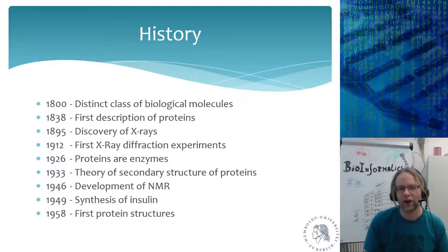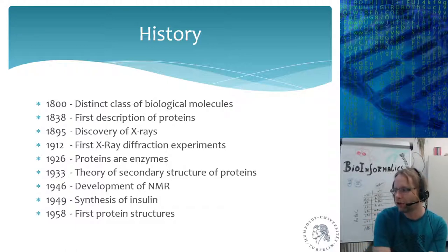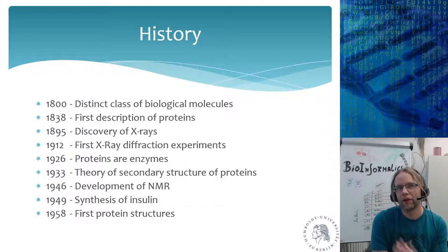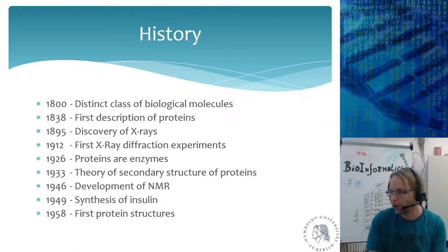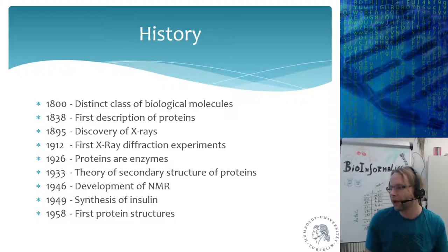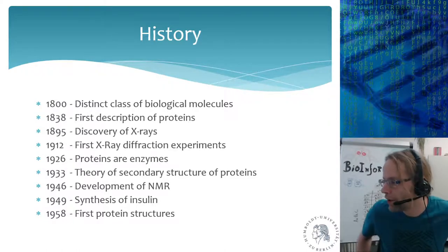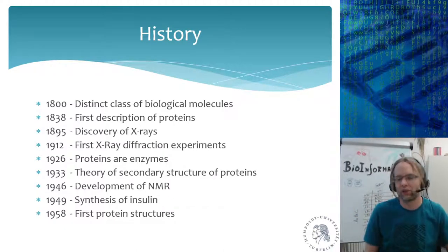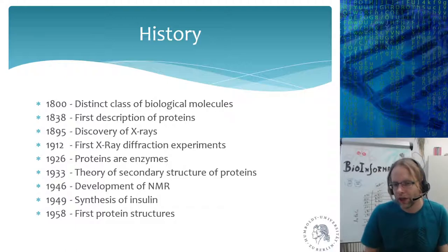In 1926, people figured out that proteins are actually enzymes. That means they are involved in chemical processes — they can speed up or slow down the transformation of one chemical to another. Importantly, they are not used up during the chemical reaction. If you would use up proteins in chemical reactions, then in the end you would have to produce a lot of proteins.